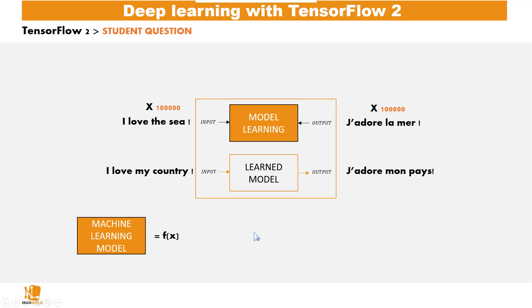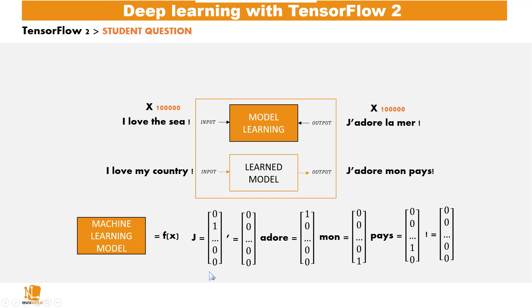To solve this problem, what we do in machine learning generally is we convert each and every word in the sentence into a vector, which itself is made up of numbers.